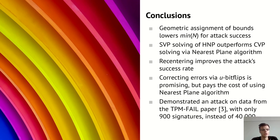Now to conclude, we have performed a systematic analysis of lattice attacks on noisy leakage of bit length of nonces in ECDSA. We found that our geometric assignment of bounds lowers the minimal number of signatures for attack success. And we found that SVP solving outperforms CVP solving via the nearest plane algorithm. We found that recentering improves the success rate, and we found that correcting errors via bit flips in the U values is promising as an improvement. During this we also demonstrated an attack on data from the TPM fail paper in which we lowered the amount of signatures required from 40,000 to only 900. We also demonstrated an attack on the Athena smartcard, which was Common Criteria certified and also FIPS 140-2 certified.